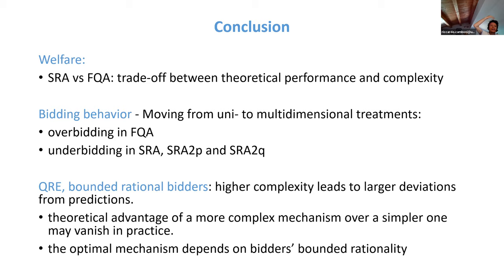To test this, we structurally estimate a Quantal Response Equilibrium model that allows for errors in bidding behavior. In QRE, you play the optimal strategy with probability close to one when the error is small, but mistakes that destroy payoff more are less likely to be made. We incorporate a CRRA utility function to control simultaneously for risk aversion and error-making. Results: risk aversion is the same across all treatments, but the error parameter is lowest — most mistakes — in the scoring rule auction and highest in the first-quality auction. Higher complexity leads to larger deviations from the Nash prediction, so the theoretical advantage of the more complex mechanism may vanish in practice. The optimal mechanism depends on bidders' bounded rationality.